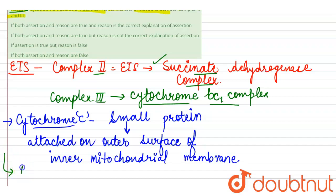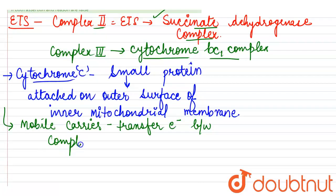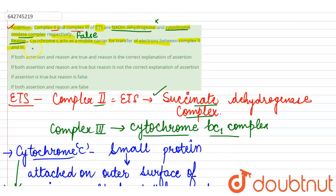Cytochrome c acts as a mobile carrier that transfers electrons between Complex 3 and Complex 4. However, the reason states it transfers electrons between Complex 2 and Complex 3, which is incorrect. Therefore, the reason is also a false statement.